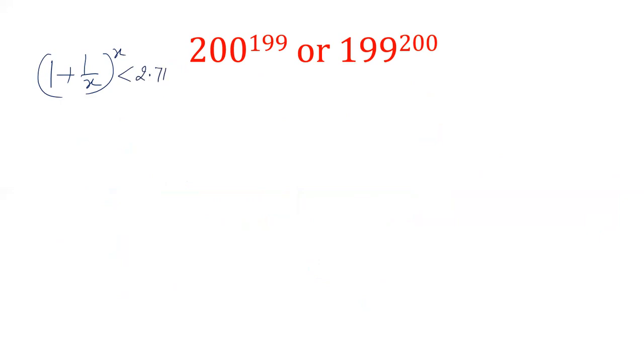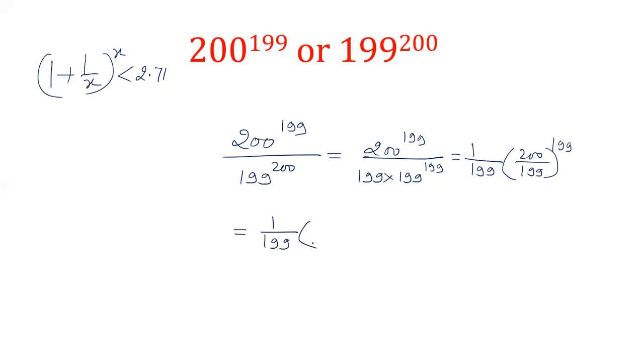Using this particular result we are going to solve this question. Now let's divide these two values. 200 power 199 divided by 199 power 200. Now it can be written as 200 power 199 upon 199 into 199 power 199. Now after this these two values which have the power 199 can be clipped together. So the value becomes 1 upon 199. 200 divided by 199.